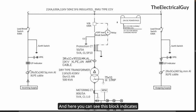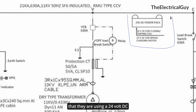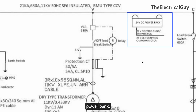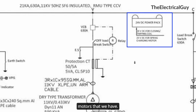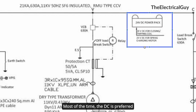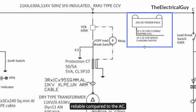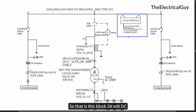Here you can see a block indicating a 24 volt DC power bank. This is required to supply the auxiliary equipment such as the closing and tripping coils of the circuit breakers and the charging motors. DC is preferred as a control voltage because it is more reliable compared to AC.